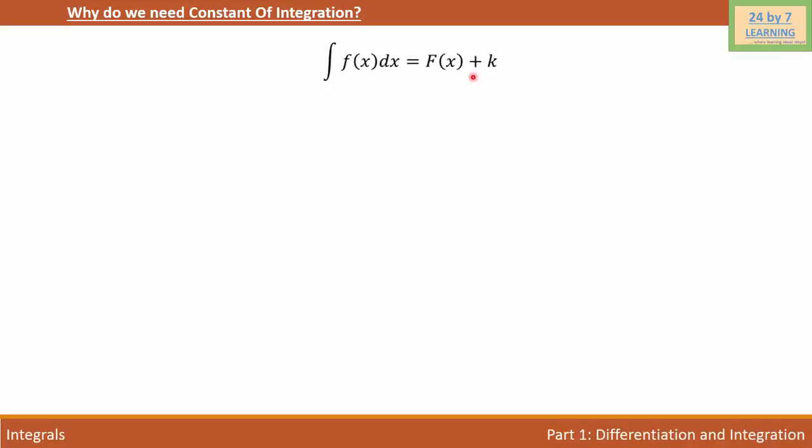So let's consider a function first. d/dx of sine x is cosine x, and d/dx of sine x plus 10 is also cosine x. As you know, integration is the inverse process of differentiation. So looking at these two differentiations, how do I know to write the exact integration of these two differentiations?